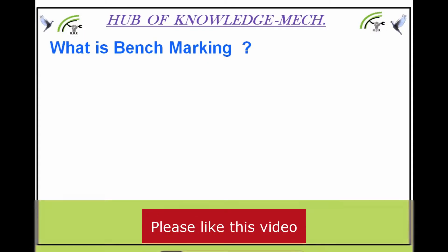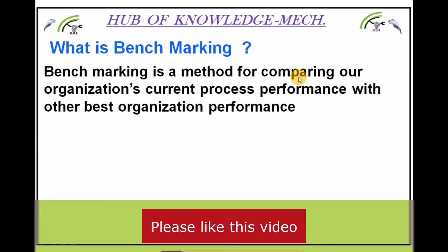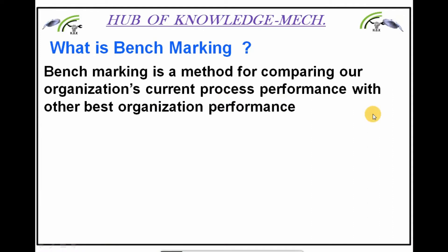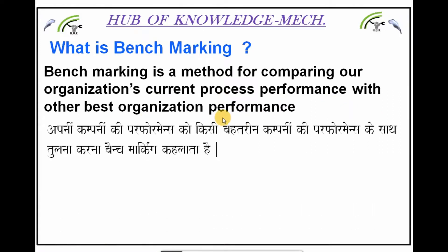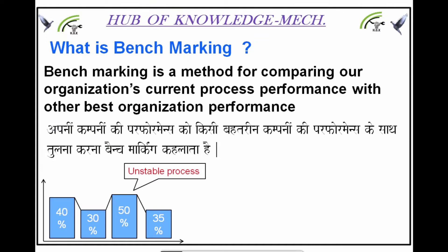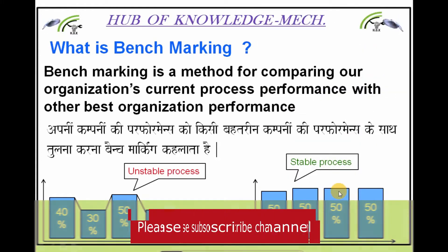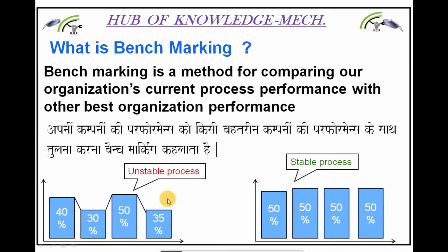Let's first discuss what is Benchmarking. Benchmarking is a method for comparing our organization's current process performance with other best organizations' performance. This is the performance of the best organization's current performance — it is a stable process. There is a difference between an unstable process and a stable process. This is a non-performer company and this is a performer company — a well-reputed and well-stable company.